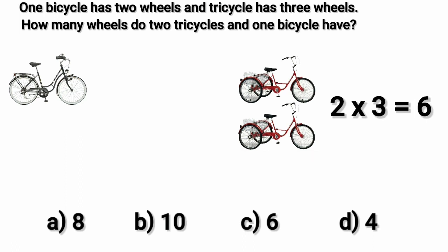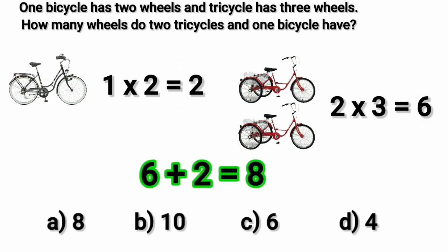So two tricycles have two multiplied by three, that is two threes are six wheels. Now we will look at the bicycle. One bicycle has two wheels, one twos are two. So in two tricycles and one bicycle we have six plus two, that is eight wheels. Here option a, eight, is the correct option.